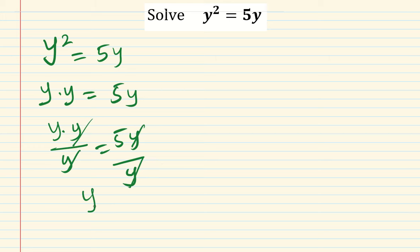So 5y over y, which leaves us with y = 5. But ordinarily this is a quadratic equation, so it means you are supposed to have two values of y.